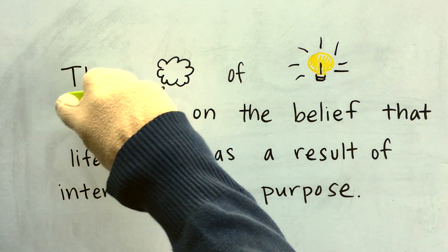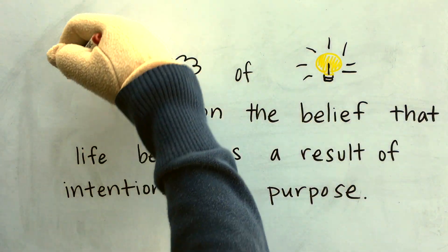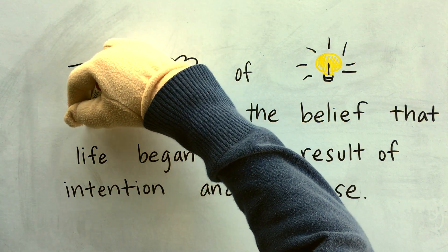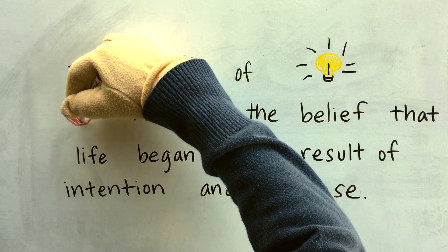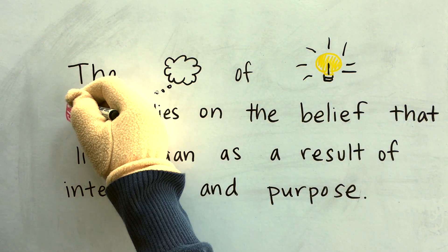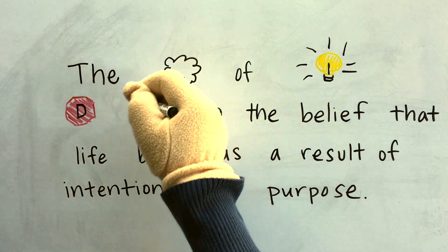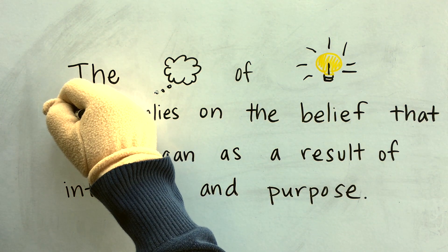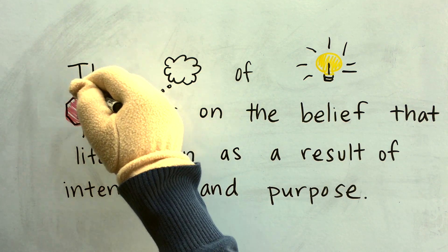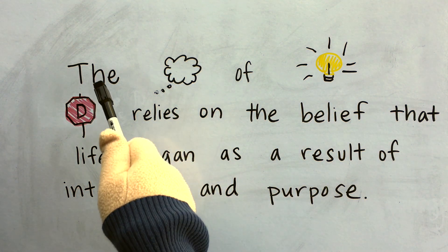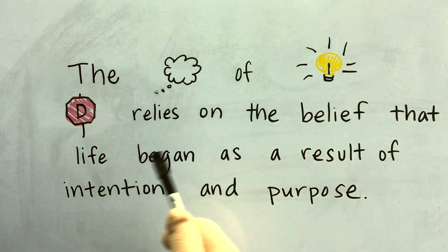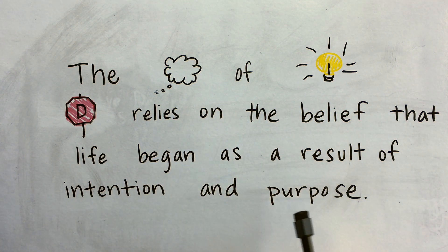Now let's erase the word design. Let's make a stop sign with the letter D — a stop sign is an octagon with eight sides. So we are going to make a sign with a D, also known as D-sign. Do you get it? D-sign. The theory of intelligent design relies on the belief that life began as a result of intention and purpose.